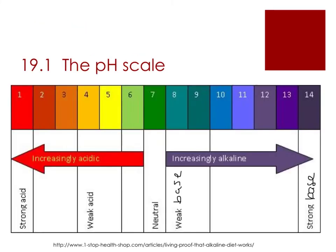Let's start by taking a look at the pH scale. The pH scale is a continuum, so there are no hard and fast cut-offs. Generally speaking, strong acids have a pH of about 1, strong bases have a pH of about 14, and a pH of 7 represents a neutral solution. As you move from pH 7 to pH 1, solutions get more acidic. As you move from pH 7 to pH 14, solutions get more basic.